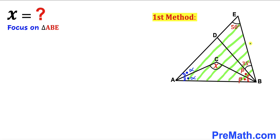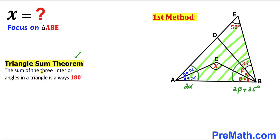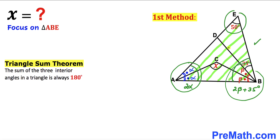Here's our next step. Let's focus on the bigger triangle ABE, whose whole angle at one vertex is alpha plus alpha, making 2 alpha. This whole angle is alpha, and this whole angle is going to be beta plus beta plus 35 degrees, giving us 2 beta plus 35 degrees. Now let's recall the triangle sum theorem: the sum of three interior angles in a triangle is always 180 degrees. Therefore, in triangle ABE, the sum of these three angles must equal 180 degrees.